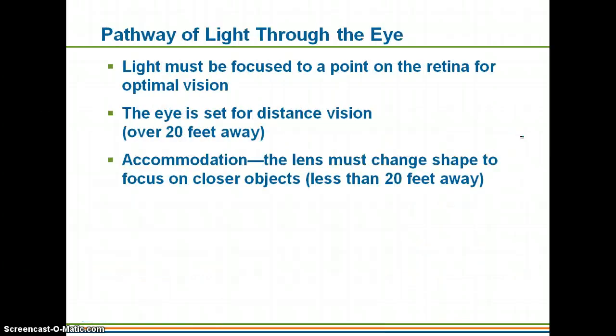So how we actually get light and make images and are able to process it — light must be focused to a point on the retina for optimal vision. If it is not exactly focused on the retina, you are not going to have perfect vision. Naturally our eye is set for distance vision — things that are more than 20 feet away — and if something is closer than 20 feet, our lens actually has to change shape and become a little bit thicker.